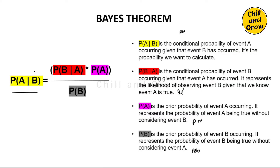P of A given B means B is the evidence. If B is the evidence and A is the prior probability, then after observing evidence B, A becomes the Posterior Probability — the updated belief about event A given the new evidence.